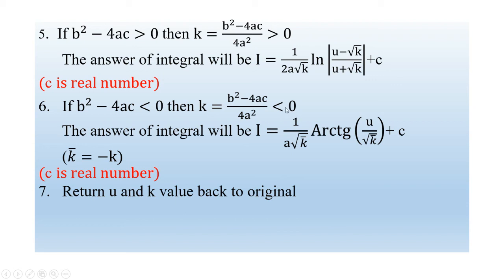When k is smaller than zero, the answer of the integral is I = (1 / (a√k̄)) × arctan(u / √k̄) + C, where k̄ = -k, and C is a real constant.